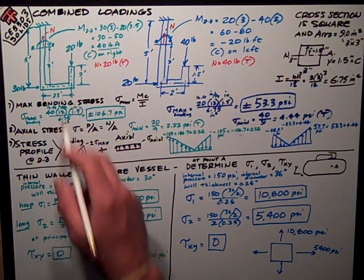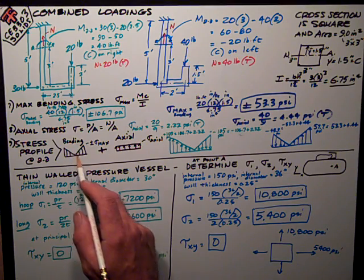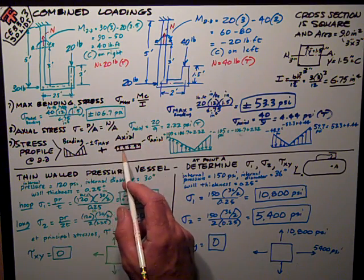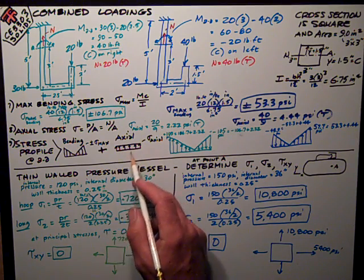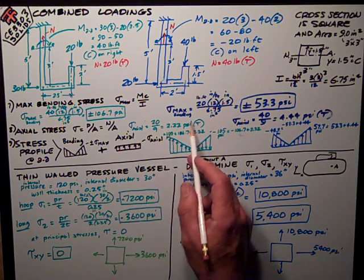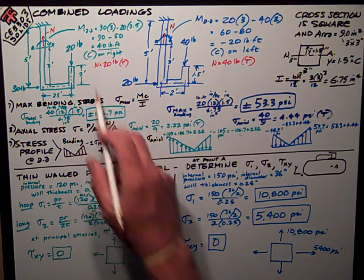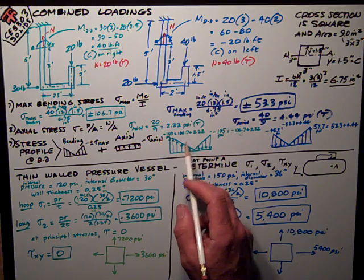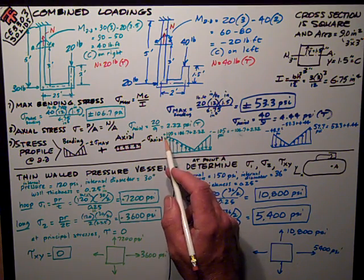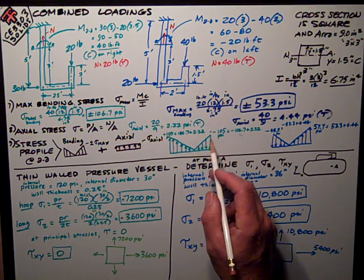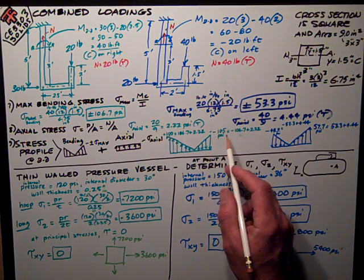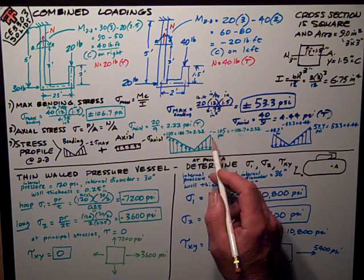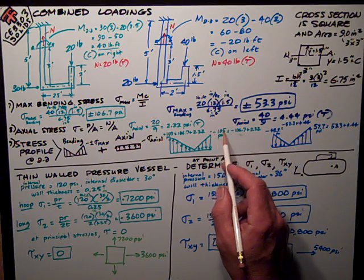Finally, I wanted to know the stress profile at section AA. The profile due to bending is plus or minus sigma max at the extreme fibers. For combined loading, I add the axial stress, which is uniform over the entire surface. For the green test, I had compression on the right and tension on the left, so I get 106.7 plus 2.22 axial equals approximately 109 PSI on the left side. Going to zero with a shifted neutral axis, then on the right side: negative 106.7 plus 2.22 axial gives negative 105 PSI.